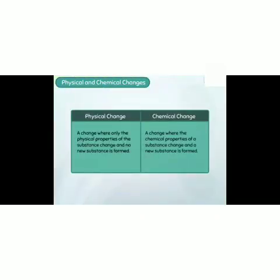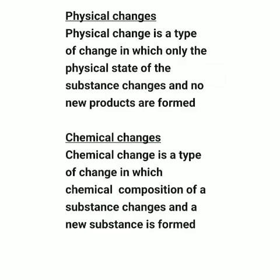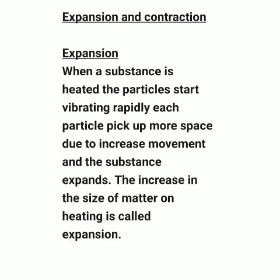You might have understood the differences. Now read the definition with me. Physical change is a type of change in which only the physical state of a substance changes and no new product is formed. Chemical change is a type of change in which the chemical composition of a substance changes and a new product is formed.